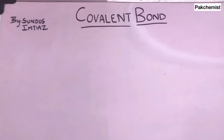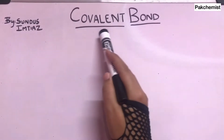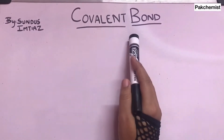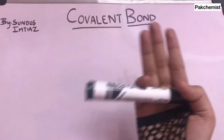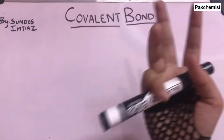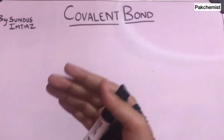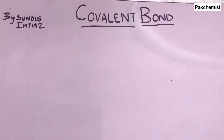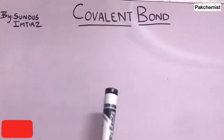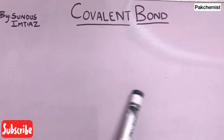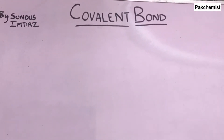Hello to all the students, I hope you all are in good health. Today we are going to talk about covalent bonds, and we will talk about different types like single, double, and triple bonds. We will go through the examples of each type. I will teach you in a very simple way, so watch this full video and don't forget to subscribe to this channel.